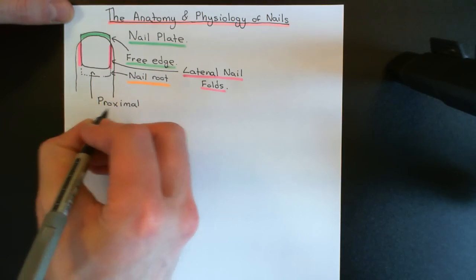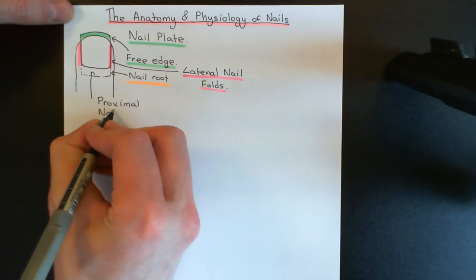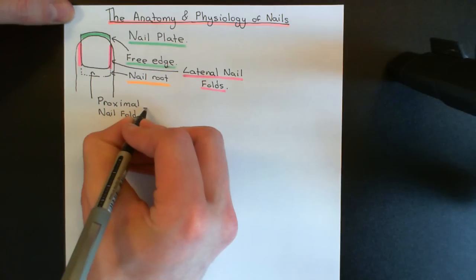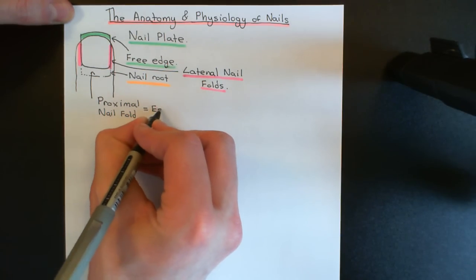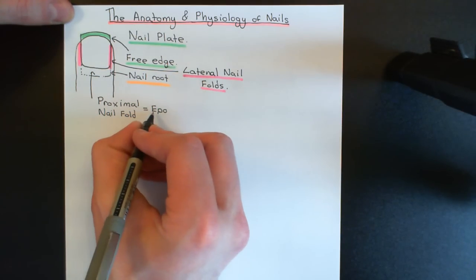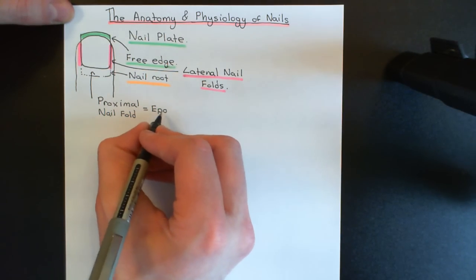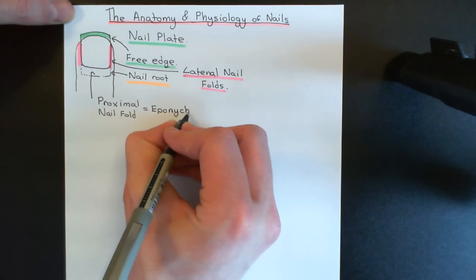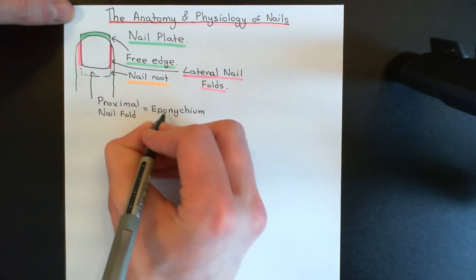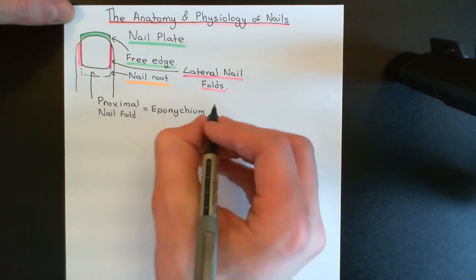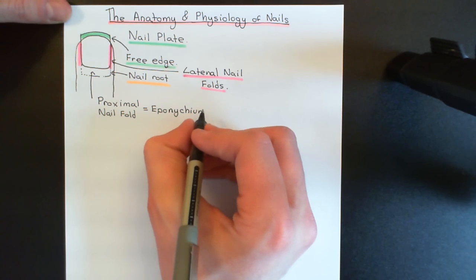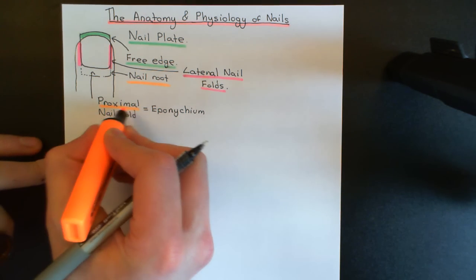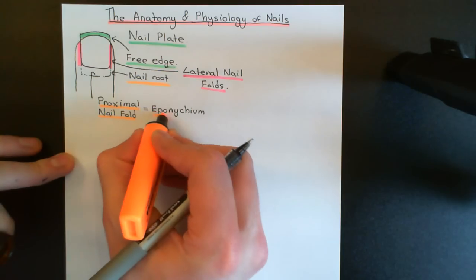Proximal nail fold, or alternatively, the eponychium. "Epo" or "epi" means "upon," and "nychium" means pertaining to the nail — so this is sitting upon the nail. The eponychium is the other name for the proximal nail fold here that's covering up the nail root.